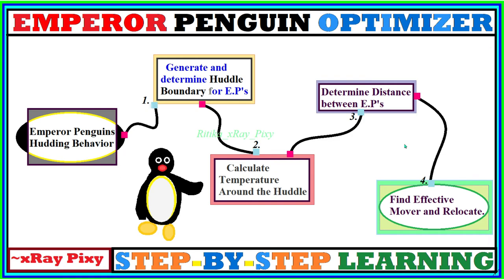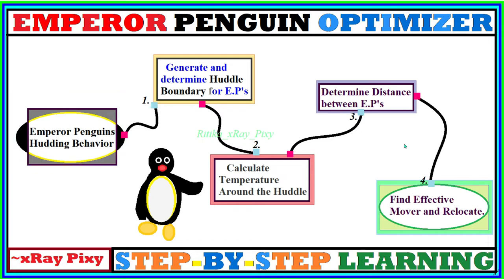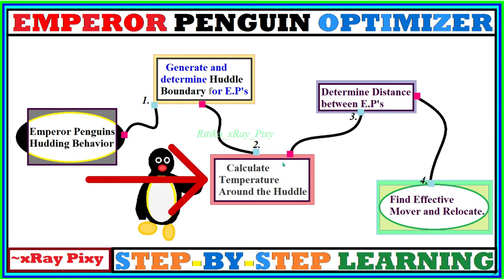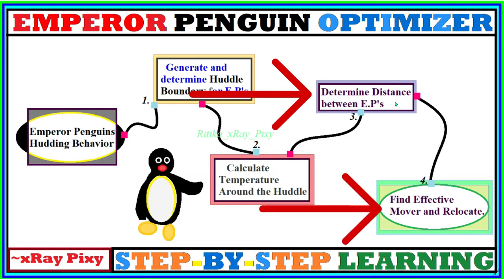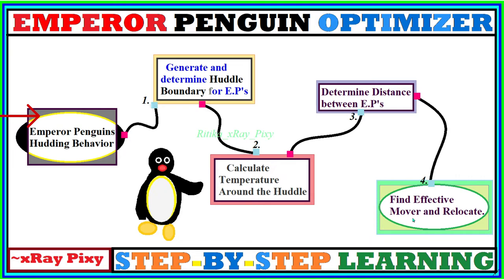Since this algorithm mimics the huddling behavior of emperor penguins, there are four main steps for that behavior. First, we generate and determine the huddle boundary for emperor penguins. After that, we calculate the temperature profile around the huddle. Then, we determine the distance between the emperor penguins. Finally, we find the effective mover and relocate it. These are the four main steps used to represent the huddling behavior of emperor penguins.